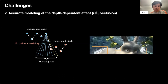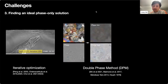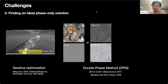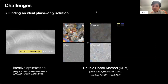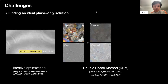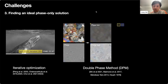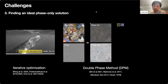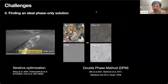Finally, existing holographic displays typically only modulate phase. So we have to convert or directly find a phase-only representation for the intrinsically complex hologram. Two typical approaches are iterative optimization and double-phase encoding. Iterative optimization is more time-consuming but gives better results, while double-phase encoding is very fast but not always versatile for all types of inputs.